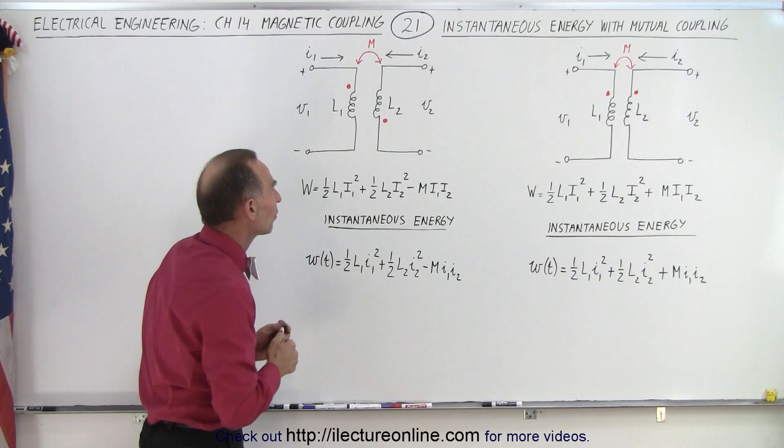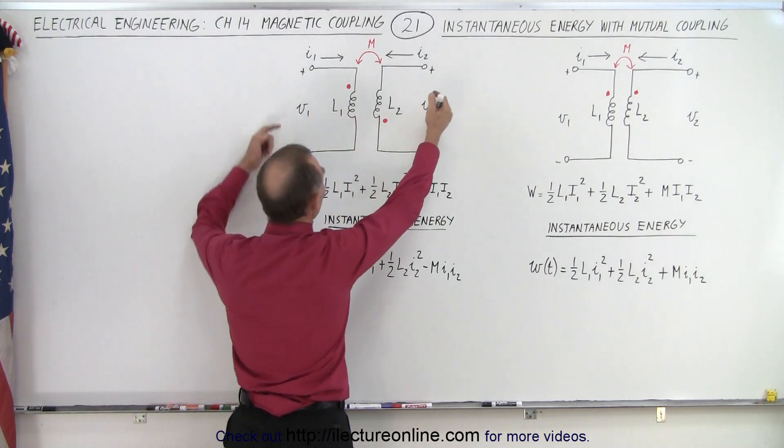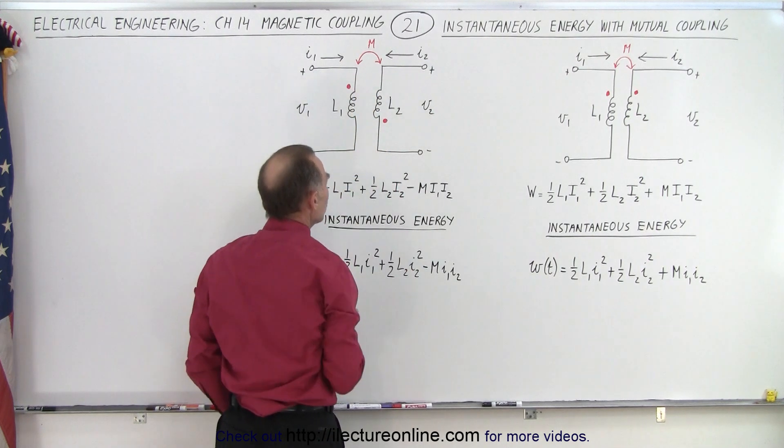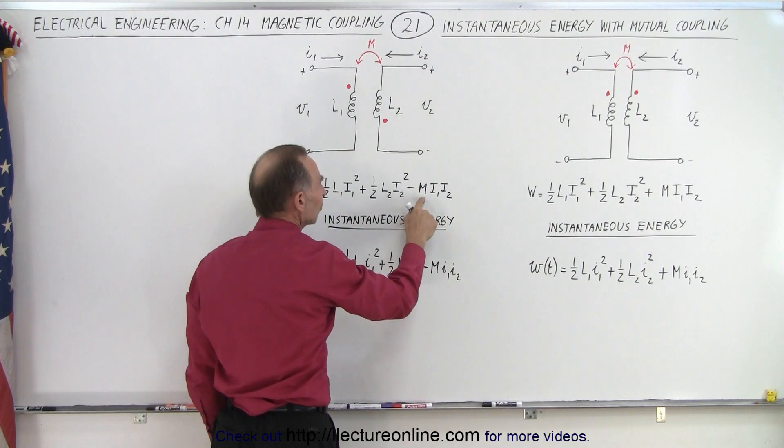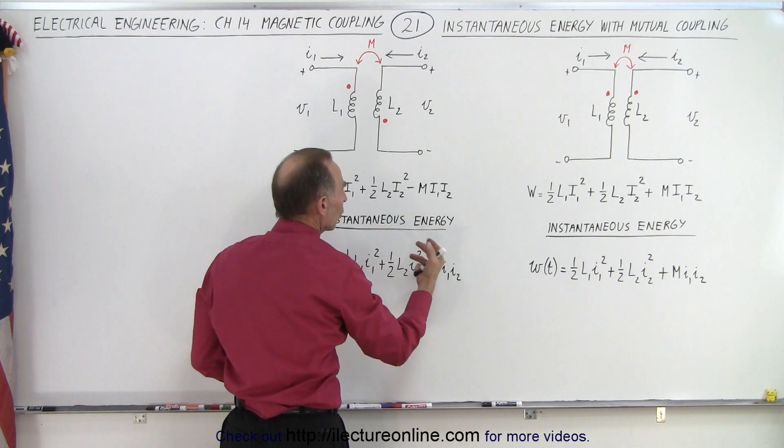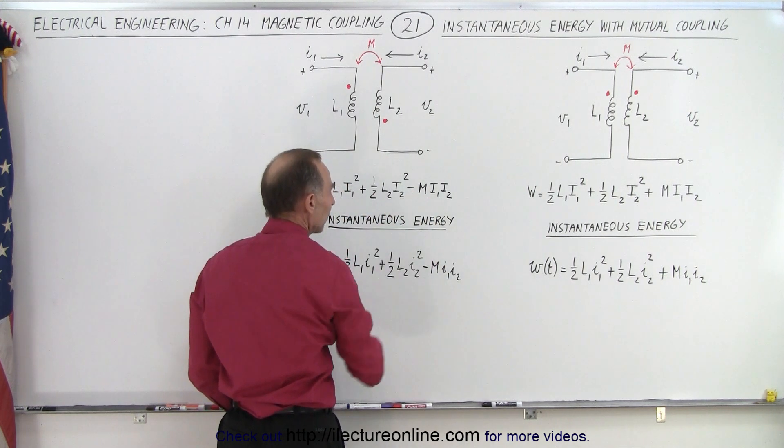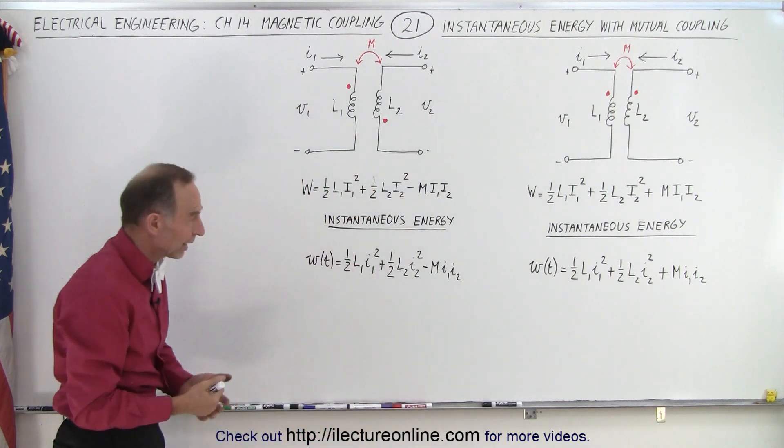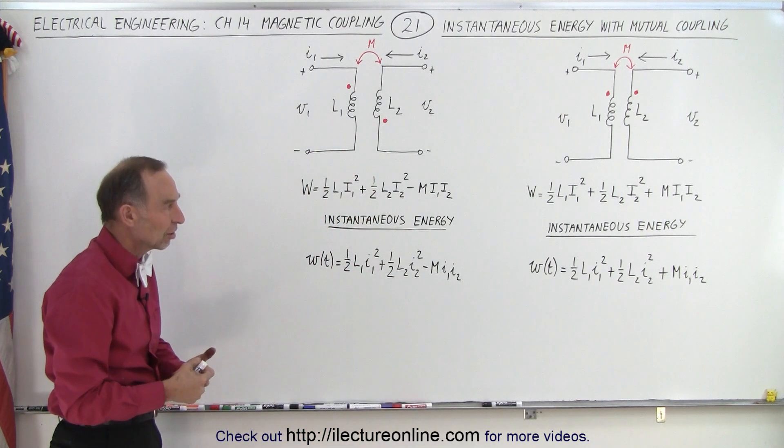But also notice that if the dots are on the opposite side, we have the current entering this way on the side of the dot, on the opposite side of the dot, then the mutual inductance is such that it actually takes energy out of the total system and you get a negative instead of a positive. And of course it would be the same for both equations for the total energy and the instantaneous energy.